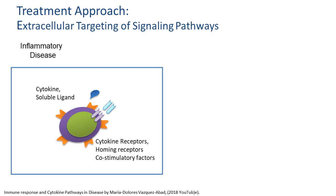The cytokine is knocking at the door but doesn't come into the house — it just brings a message, and the cell interprets that message. So the extracellular domain is the anatomical domain, the transmembrane domain is the anchor, and the intracellular domain is the functional domain.